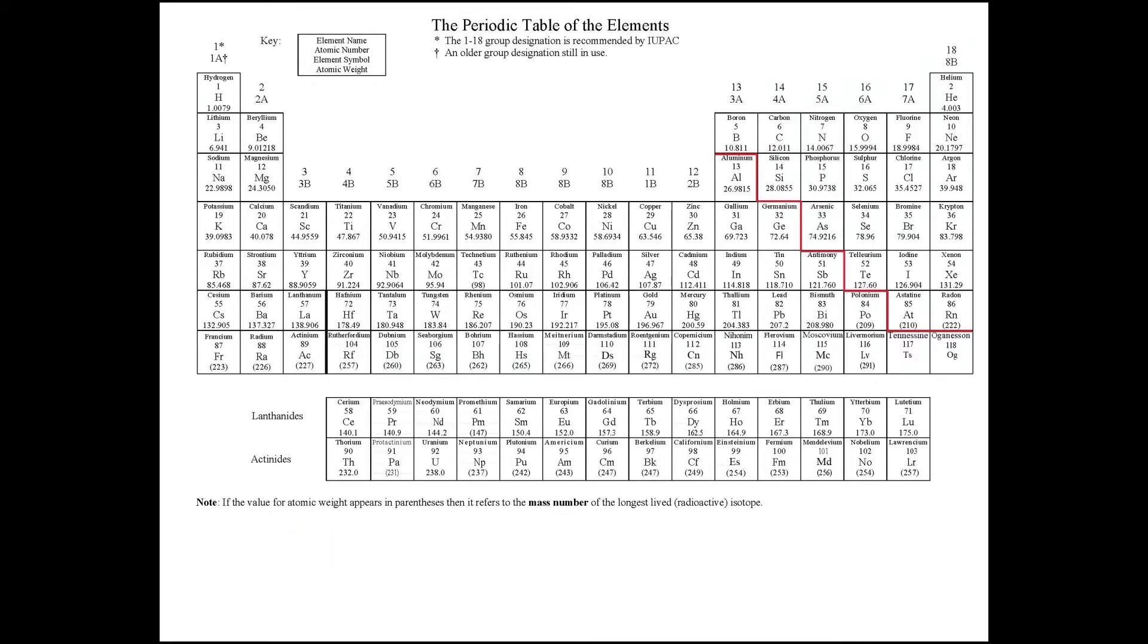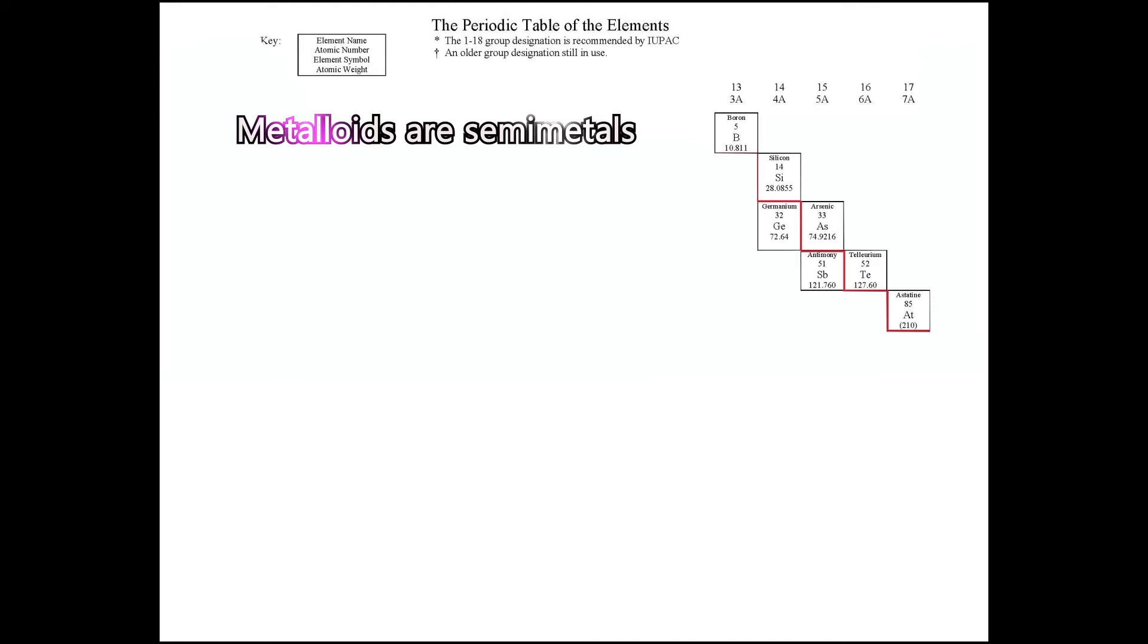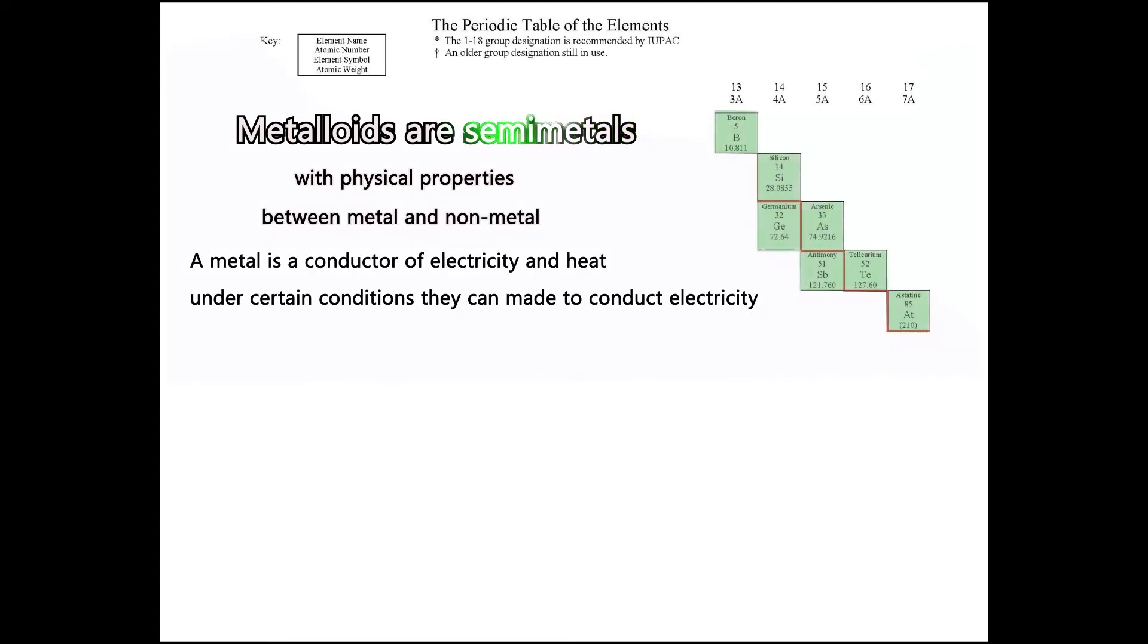The semi-metals or metalloids are found along the red border. These metalloids have properties that are in between a metal and a nonmetal. They can be made to conduct electricity under certain controlled conditions. They are also known as semiconductors.